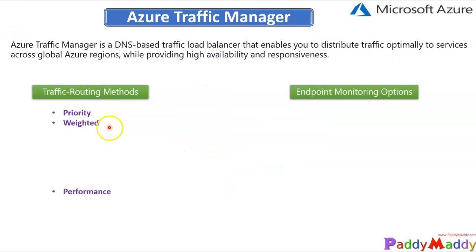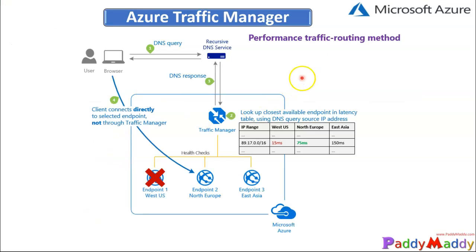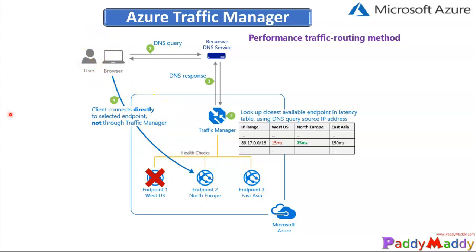The performance routing method lets you select performance when you have endpoints in different geographical locations and want end users to use the closest one. With this method, you deploy endpoints in two or more regions — for example, West US, North Europe, and East Asia — and improve responsiveness by routing traffic to the location closest to the end user.